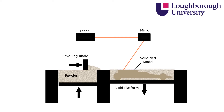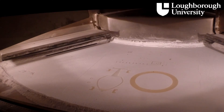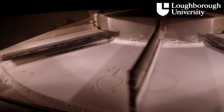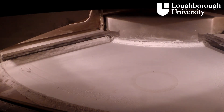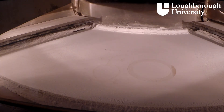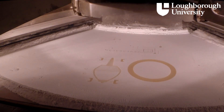Any material that is not part of the model's geometry is left unsintered in the original powder form and acts as a support structure. The build platform lowers a single layer thickness. The leveling blade sweeps across and covers the platform with another layer of powder. The laser then selectively sinters the next layer. This process of re-coat and scan is repeated layer by layer until the model is finished.